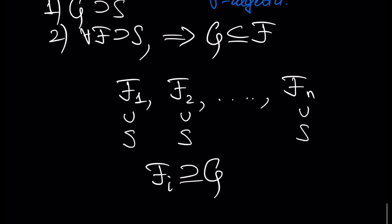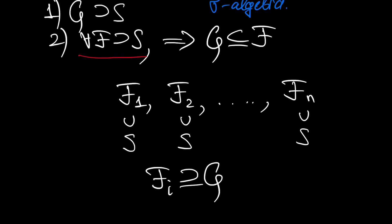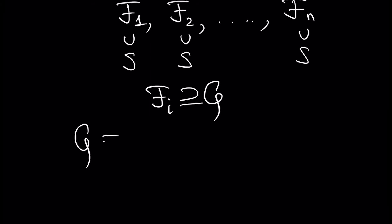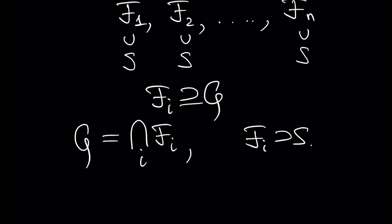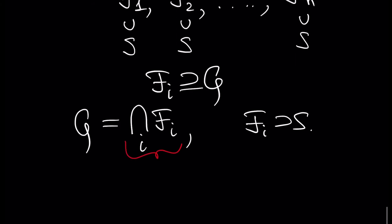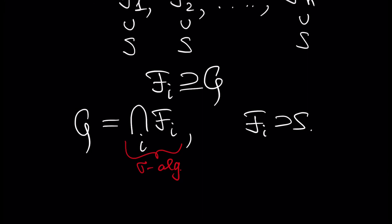In other words, for any sigma algebra F that contains S, our minimal sigma algebra must be inside this F. It's easy to see that our minimal sigma algebra G can be constructed as the intersection of all sigma algebras Fᵢ that contain S. Why? Because the intersection of sigma algebras is also a sigma algebra — we know this from the previous result. And of course this intersection will be the smallest sigma algebra, because this intersection will be inside each Fᵢ.